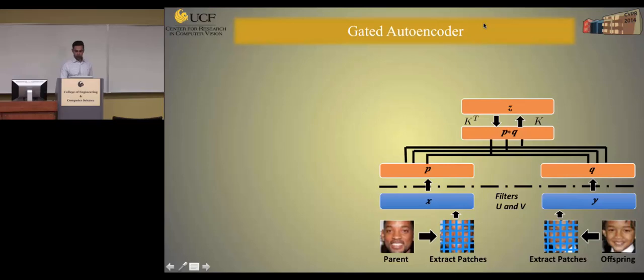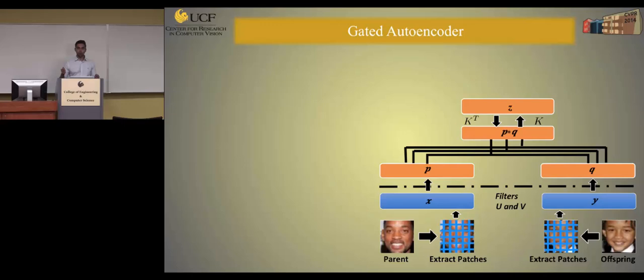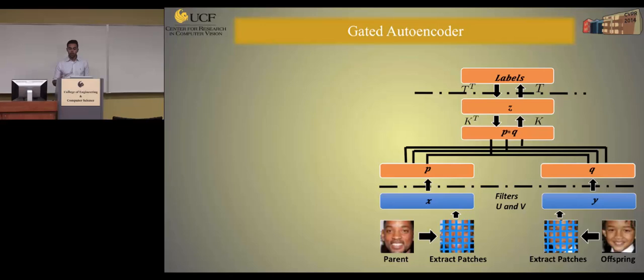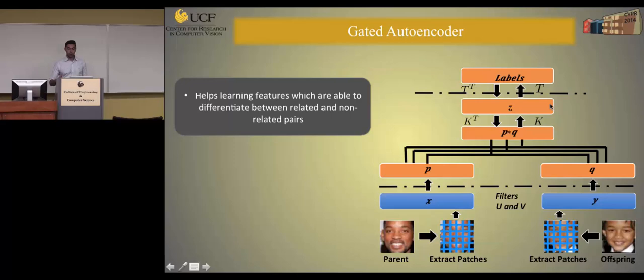Since Z encodes the relationship between the pair of images, one approach is to input related pairs — parent and offspring images from the same family — and non-related pairs into the system, get the corresponding Z, and feed it to a classifier such as SVM to distinguish between related and non-related pairs. But what we propose in this paper is to add a fully connected network on top of the generative layer. We refer to the last layer as a discriminative layer, which helps find features that better differentiate between parent and offspring.